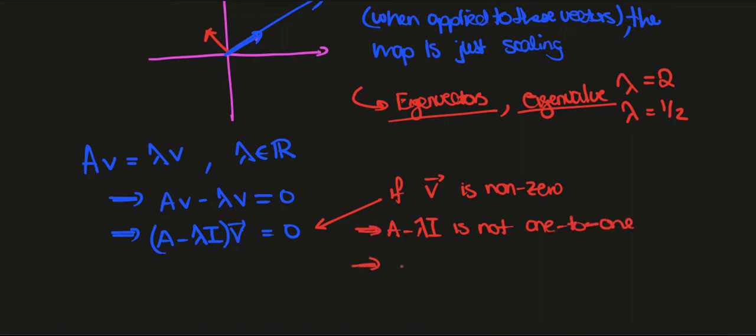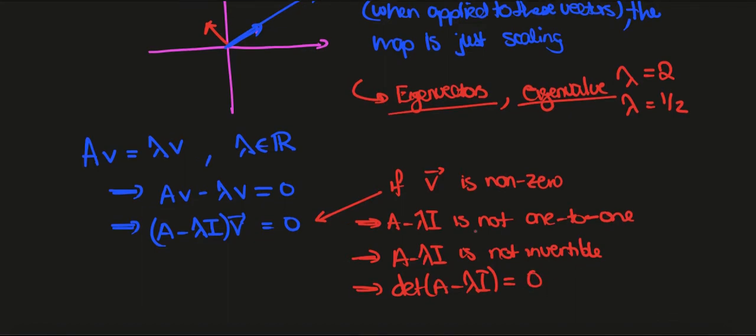And so in particular, A minus lambda I is not invertible, and as a consequence, such things can be found by just solving determinant of A minus lambda I equals 0.